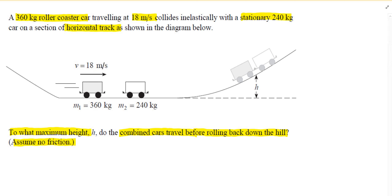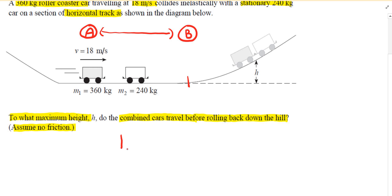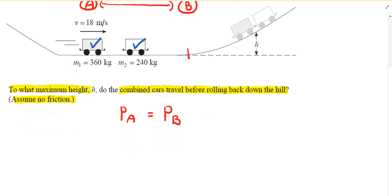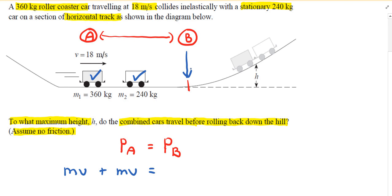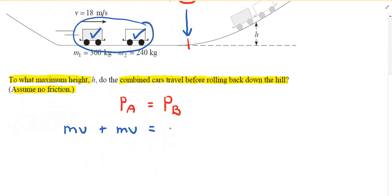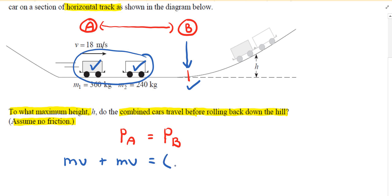Let's label the diagram with position A at the start and position B after the collision. Going from A to B, the momentum at A equals the momentum at B — conservation of momentum. At the beginning we have two objects: the roller coaster and the stationary car, each with momentum mass times speed. At position B the two cars are clumped together, so the momentum is the combined mass times their speed at B.